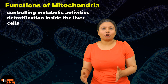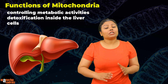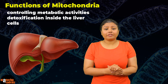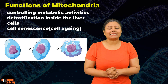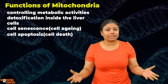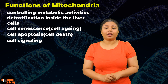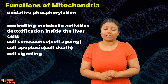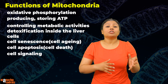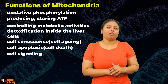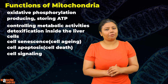The next function of mitochondria is to control the different metabolic activities in a cell. It also helps to detoxify toxic materials inside the liver cells. Mitochondria is also known to be involved in cell senescence, that is aging of cells, and cell apoptosis, that is cell death. It is also responsible for cell signaling and different other activities, but the primary activity remains oxidative phosphorylation — producing and storing energy in the form of ATP during aerobic respiration.